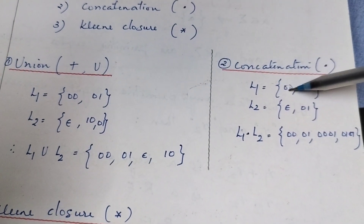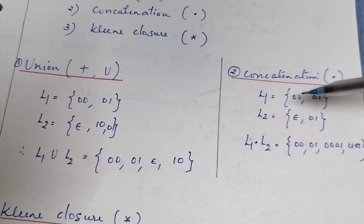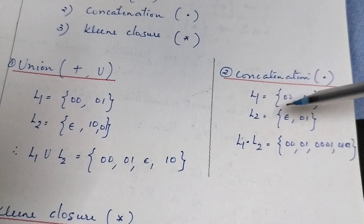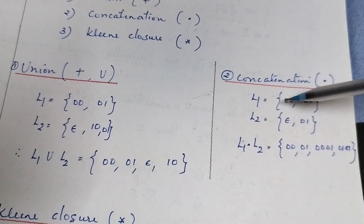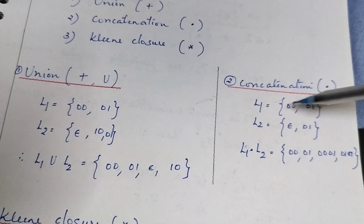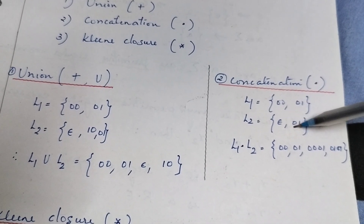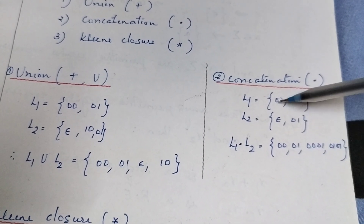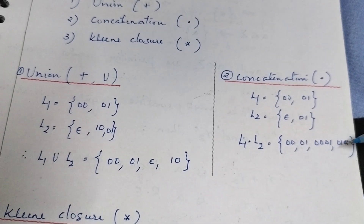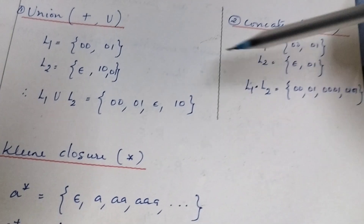Concatenation means combining strings from two languages, just as we perform Cartesian concatenation in mathematical sets. Taking L1 and L2: concatenating 00 with epsilon gives 00; 01 with epsilon gives 01; 00 with 01 gives 0001; and 01 with 01 gives 0101. That is the concatenation operation — we combine every string from L1 with every string from L2.